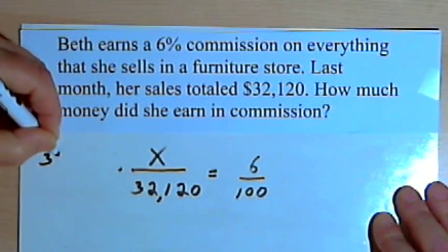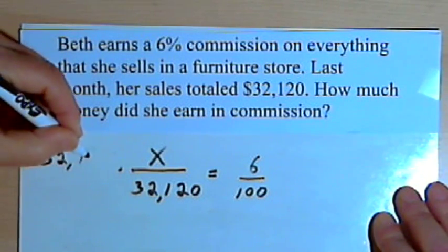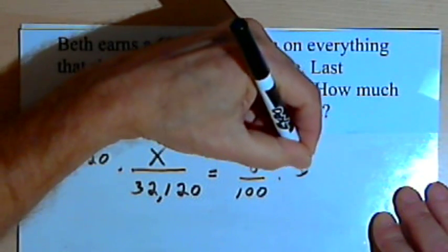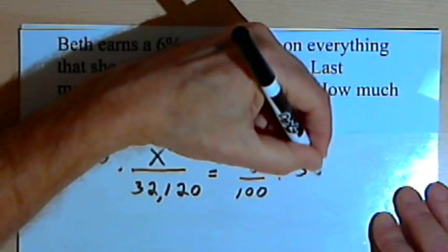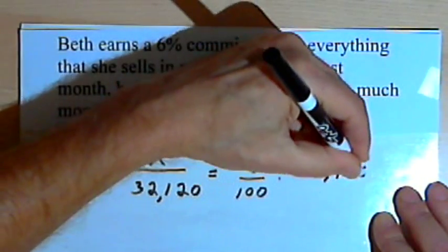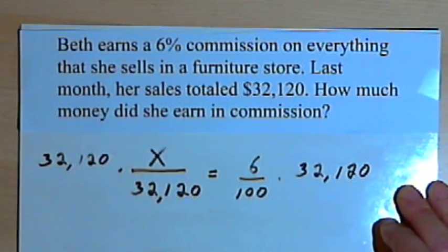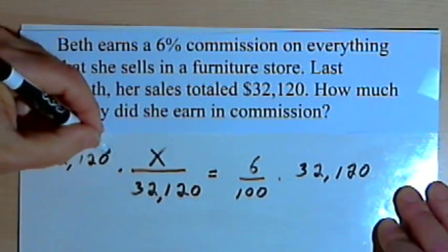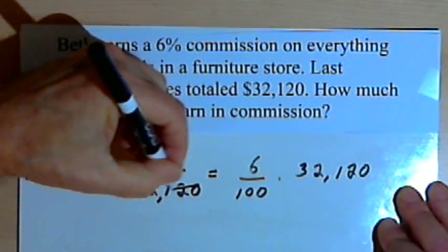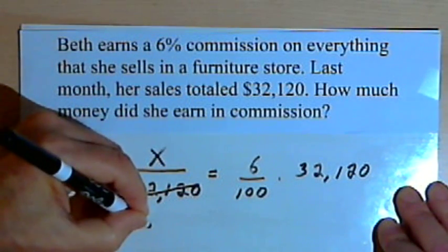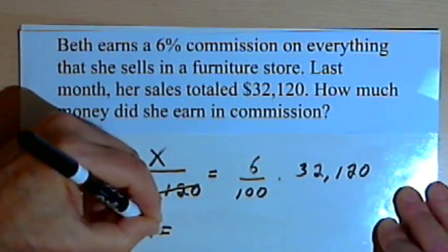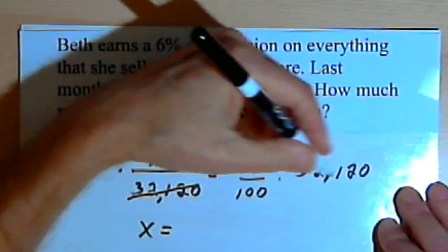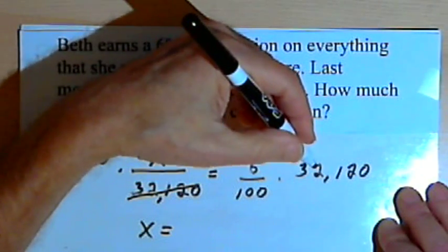To isolate the x on the left side, I'll multiply by 32,120. And of course I have to multiply the right side of the equation by that same number, 32,120. On the left side, I'm going to be left with x after I cancel out the 32,120. So now I've got x equals 6 times 32,120 divided by 100. When I do the multiplication,